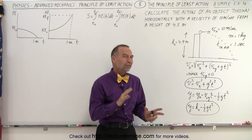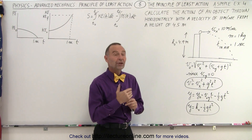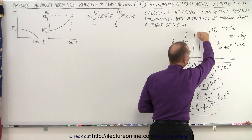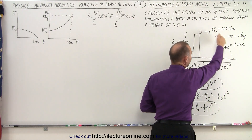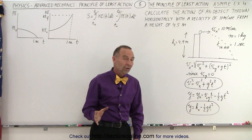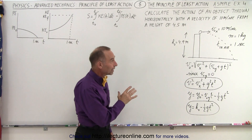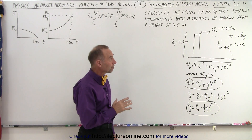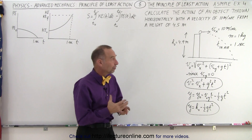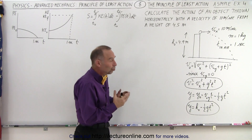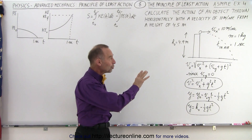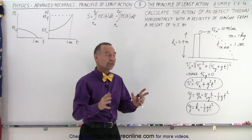There have been some questions before: what if the object travels in a straight line instead of going around that particular path? Well, if it does, and we calculate the action of that path, we should get a bigger value. That's something we're going to show you in the next several videos.